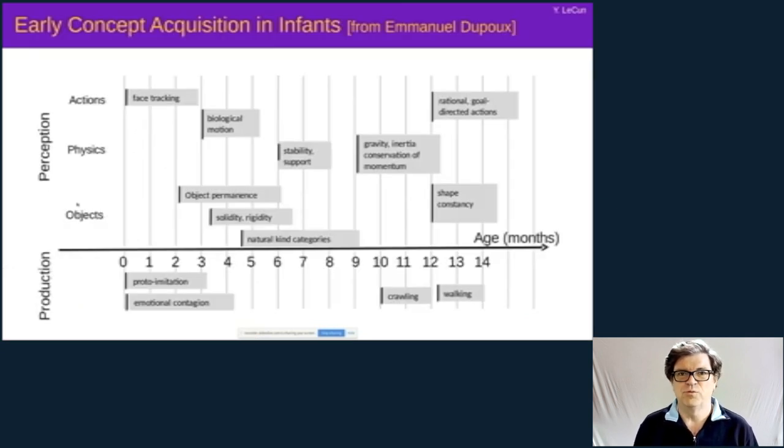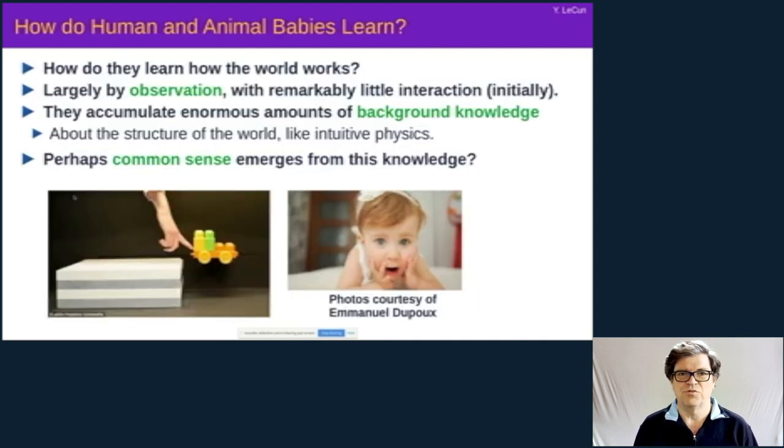This is a chart put together by Emmanuel Dupou that shows at what age babies learn basic concepts like object permanence, stability, and intuitive physics - inertia, gravity, and things like this. This seemingly is being learned almost with no interaction with the world, mostly by observation. Young babies have very little ability to interact directly with the world. And the mystery is how does that happen and how does it happen in animals as well.